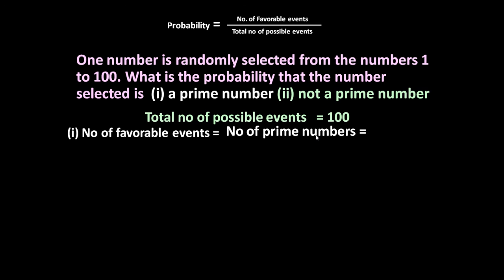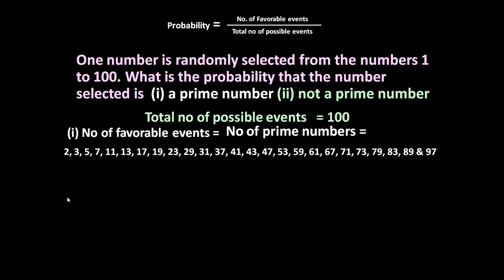A prime number is a number which is divisible by itself and by 1 only. Note that 1 is not counted as a prime number. The prime numbers from 1 to 100 are: 2, 3, 5, 7, 11, 13, 17, 19, 23, 29, 31, 37, 41, 43, 47, 53, 59, 61, 67, 71, 73, 79, 83, 89, and 97. If we count them, it comes to 25.